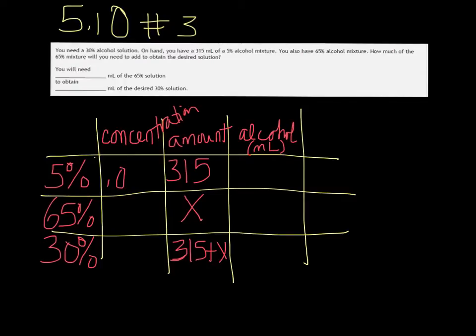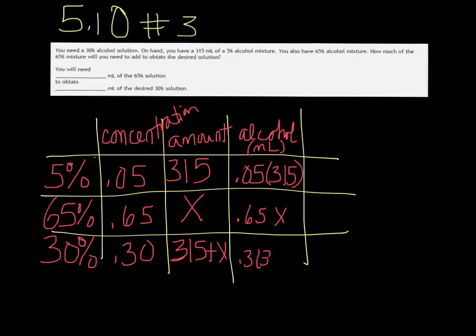Concentration, you just want to convert them to a decimal. So 0.05, 0.65, and 0.30. So it's 5% of some amount. Of in math generally means multiplication. So to get the amount of pure alcohol, you multiply those two together. So 0.05 times 315, or 0.65 times x, and 0.3 times 315 plus x.